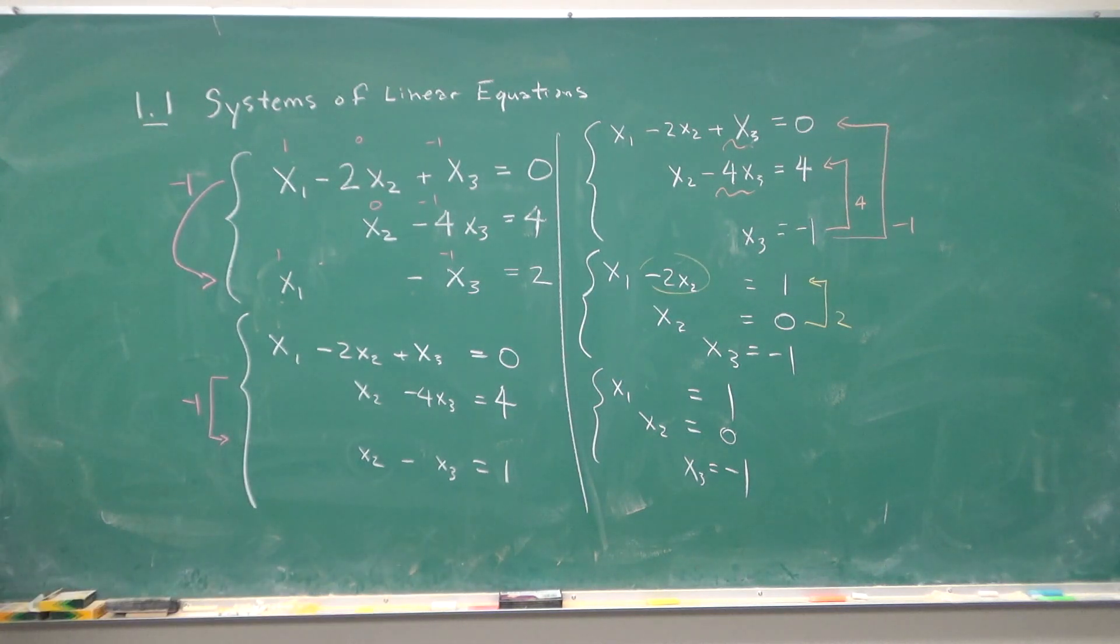Notice that what was important was the coefficient and not the variables x1, x2, and x3. So we can convert what we just did to something called matrix form.